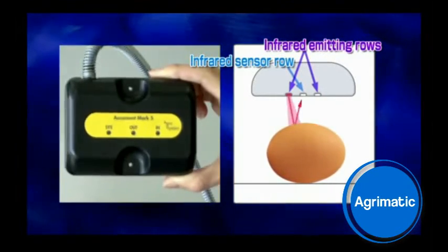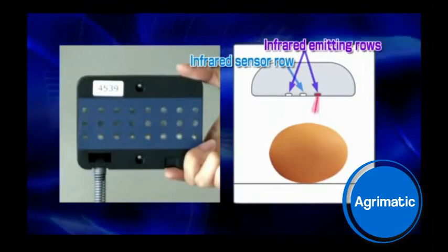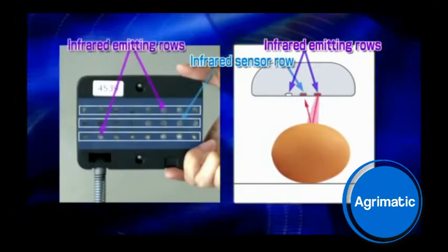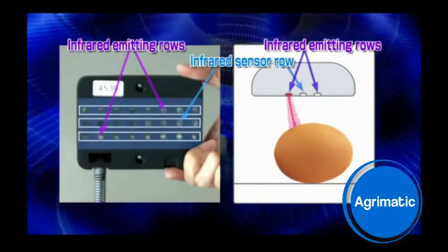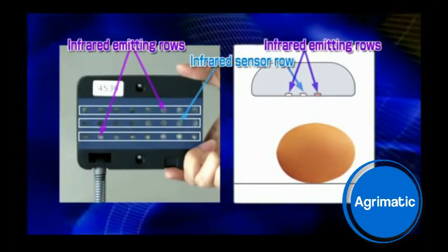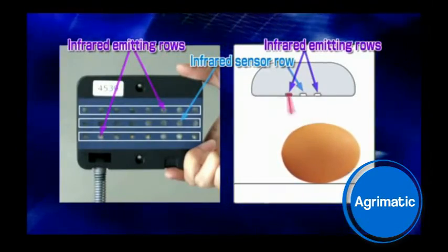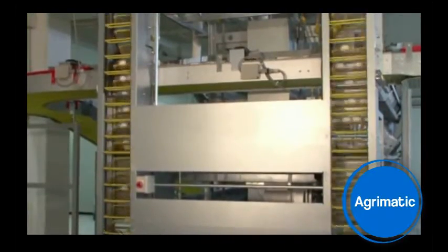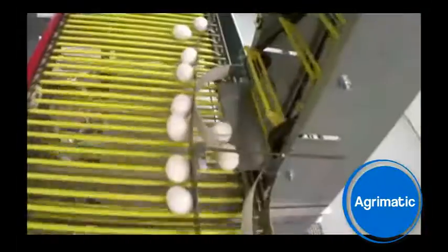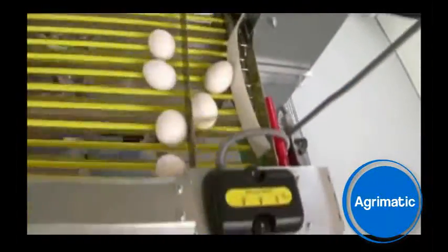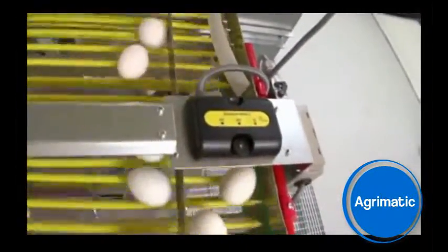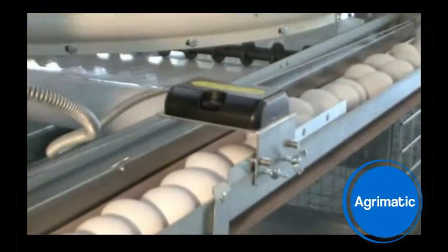In each infrared emitting row there are eight infrared emitters for ten-centimeter wide counting. Infrared is alternatively emitted from each row while highly sophisticated and optimized software processes the data from the sensors and calculates the number of eggs. This processing is done several times per second from two directions, which enables extremely reliable counting.